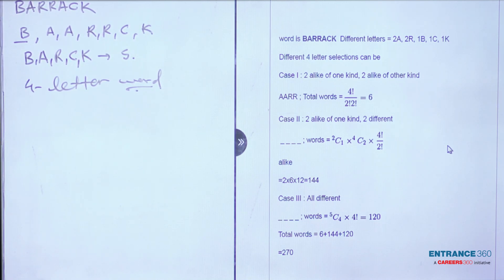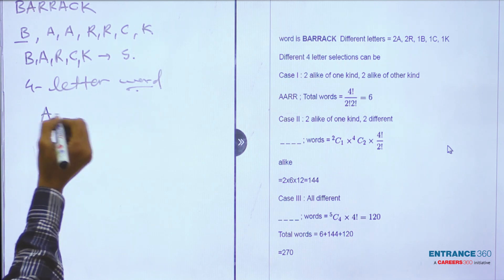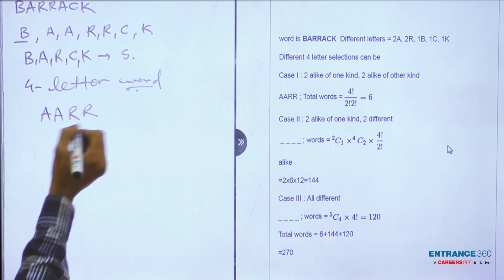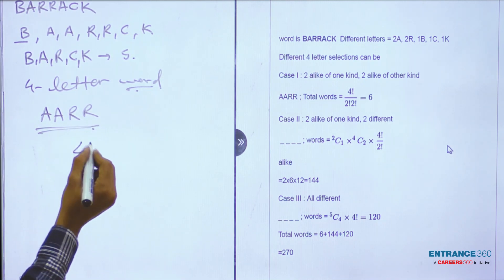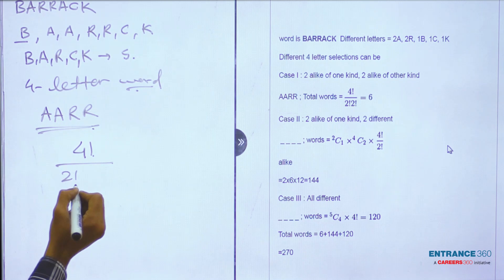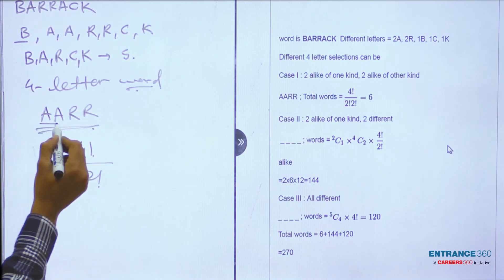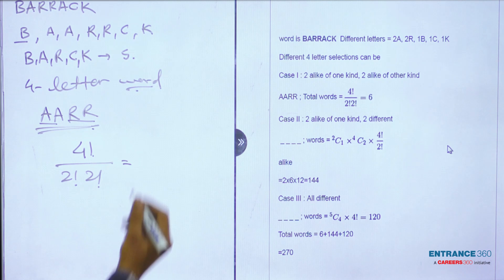First case is when two letters are alike of one kind and another two alike of one kind. So this will be A-A-R-R. The number of words will be 4! divided by 2! and 2!, because two A and two R. So this is equal to 6. This is the first case.